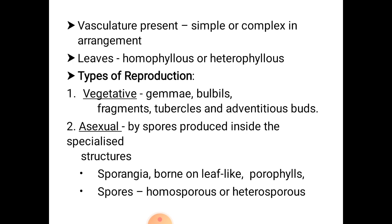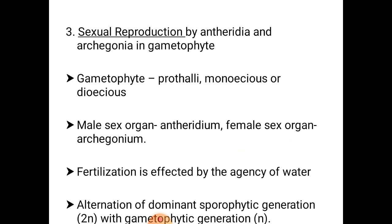These spores germinate into haploid gametophytes, also called prothalli. These gametophytes are very simple and haploid, and they reproduce diploid sporophytic plants by the sexual method. The gametophytes may be either monoecious or dioecious — monoecious meaning male and female sex organs are produced in the same thallus, or dioecious meaning the male and female sex organs are produced in separate male and female gametophytes.